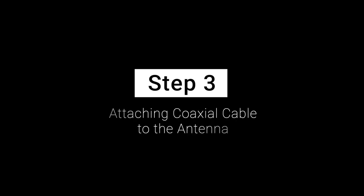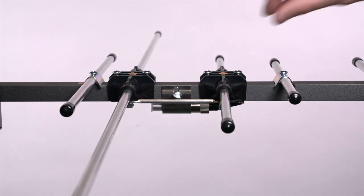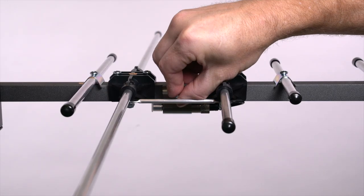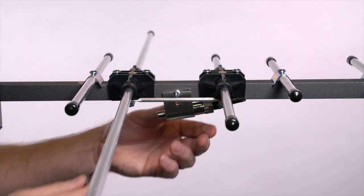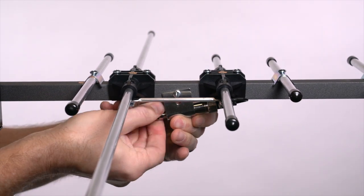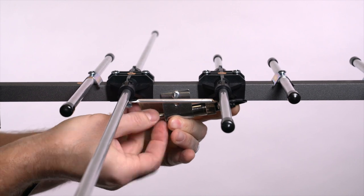Step 3: Attaching Coaxial Cable to the Antenna. Loosen the thumb screw on the bracket holding the Balun Matching Transformer. Then, attach your coaxial cable to the Balun Matching Transformer as shown.